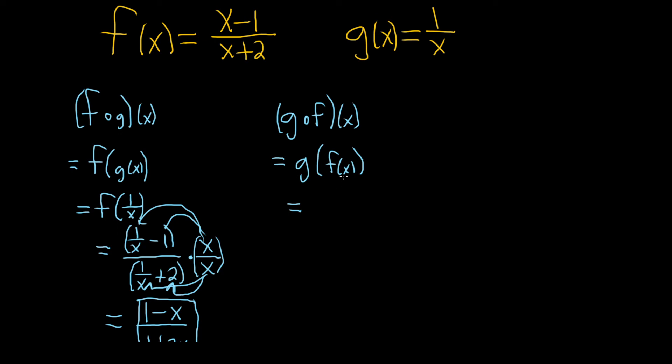And now we have to work from the inside out. So we'll start by replacing this piece here. So it's actually this, right? This whole thing. So this is g of that whole thing. So x minus 1 over x plus 2.